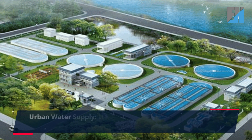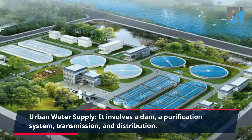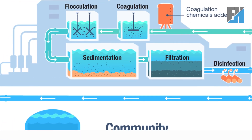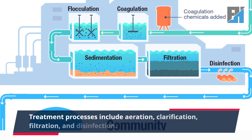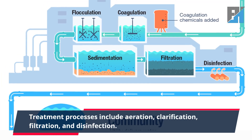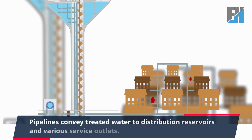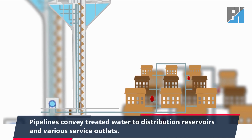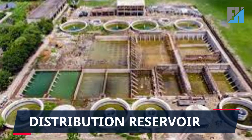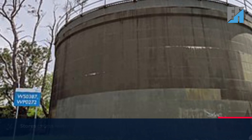Urban water supply involves a dam, a purification system, and a transmission and distribution network. Treatment processes include aeration, clarification, filtration, and disinfection. Pipelines convey treated water to distribution reservoirs and various service outlets.